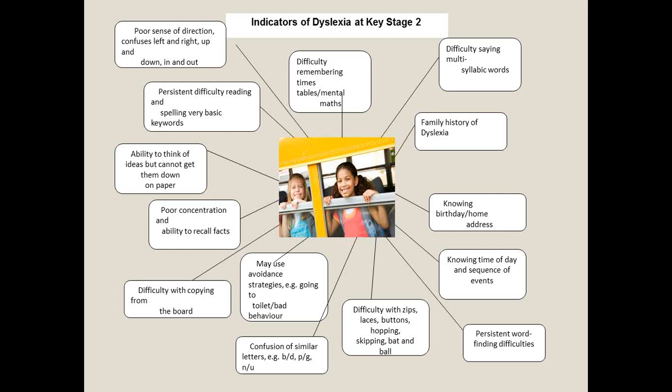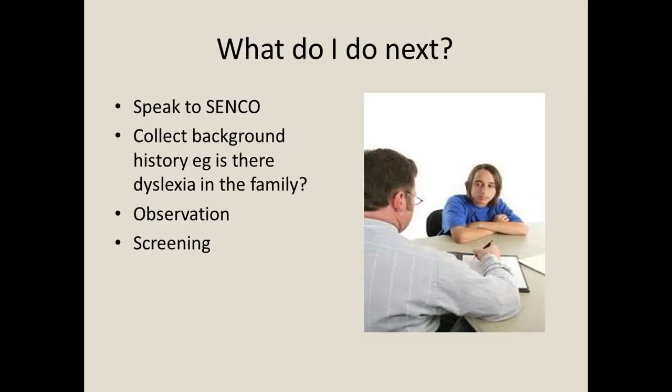If they have dyspraxic-type difficulties, they may have problems with laces and buttons, being the last child dressed after PE. Confusion of letters can be something they grow out of — in a child of five, six, or seven, it may be a developmental issue, so I don't look at that alone as proof of dyslexia. The next stage would be to speak to the SENCO, collect some observations, and look at doing some screening. As a teaching assistant, you're able to use tools like the Dyslexia Portfolio, which covers ages five to fifteen years eleven months and gives a diagnostic indication that a teaching assistant or specialist can use.